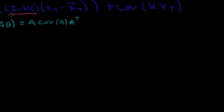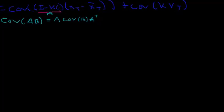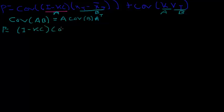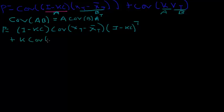In this equation, we can model (I minus KC) as A and (x_t minus x_bar_t) as B, because A is not a function of x — we're not multiplying x times another x. Similarly, K is A and v_t is B in the second covariance term. So we rewrite p as (I minus KC) times the covariance of (x_t minus x_bar_t) times (I minus KC) transpose, plus K times the covariance of v_t times K transpose.